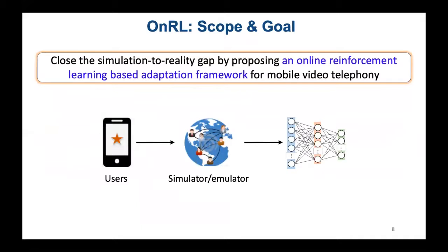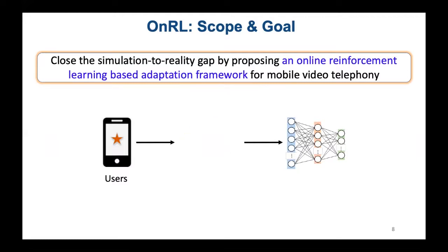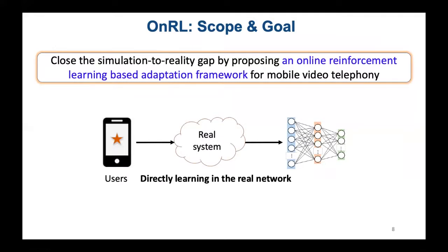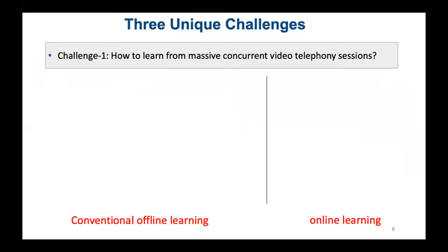In this work, we seek to close the gap through OnRR, our first online reinforcement learning-based adaptation framework for mobile video telephony. Instead of learning in a simulator, OnRR runs and keeps training at runtime directly within the operational video telephony system, so as to learn and respond to real network conditions. OnRR is not merely a straightforward learning environment shift; instead, it raises three unique design challenges.